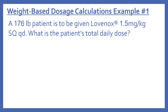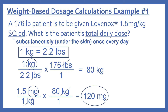Now we'll look at some examples. Example one: a 176-pound patient is to be given Lovenox 1.5 mg/kg SQ QD. What is the patient's total daily dose? Lovenox — generic name enoxaparin — is a low molecular weight heparin blood thinner used to treat or prevent blood clots. It's given 1.5 mg/kg subcutaneously once daily, so we just calculate the mg/kg dose for the total daily dose.